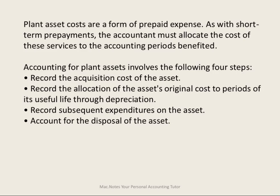Plant assets are a form of prepaid expenses, and when we account for them, there are four stages. First, we must account for the acquiring of that asset. Then we must account for how we allocate the cost of that asset over its useful life. Then if there are any subsequent expenditures to increase the life of that asset, we must account for that. And finally, how do we get rid of that asset?